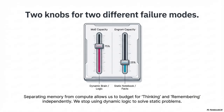It uses normalization like NFKC and lowercasing to clean up the input. The payoff is staggering: a 23% reduction in the effective vocabulary size for a 128k tokenizer — you're getting so much more semantic density for the same memory footprint.